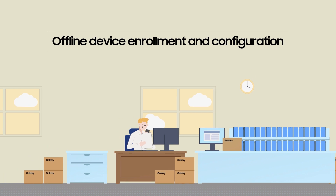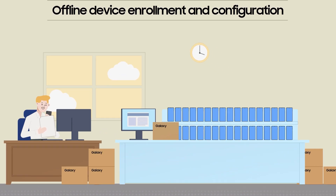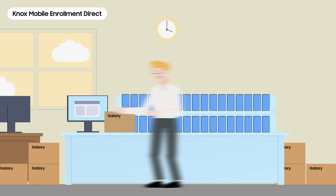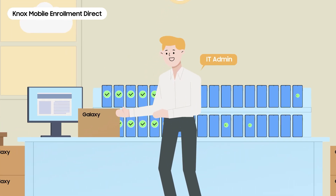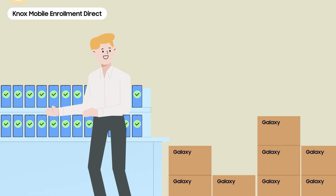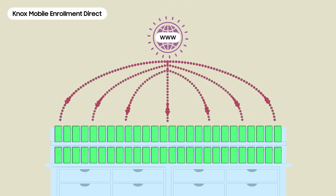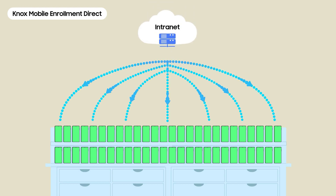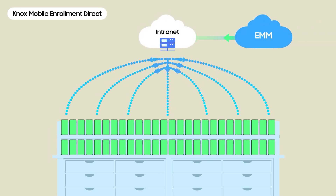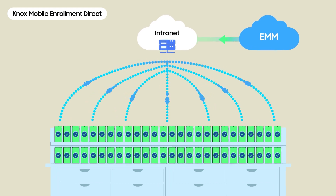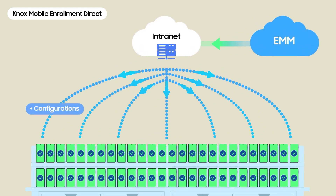In addition, Knox Mobile Enrollment enables devices to be enrolled in bulk without internet congestion. When the IT admin distributes thousands of devices to employees after completing device staging beforehand, the enrollment and configuration processes could be slowed down due to internet traffic congestion. However, Knox Mobile Enrollment maximizes the use of local network resources to enroll devices to cloud or on-premises EMM and supports device configuration deployment.